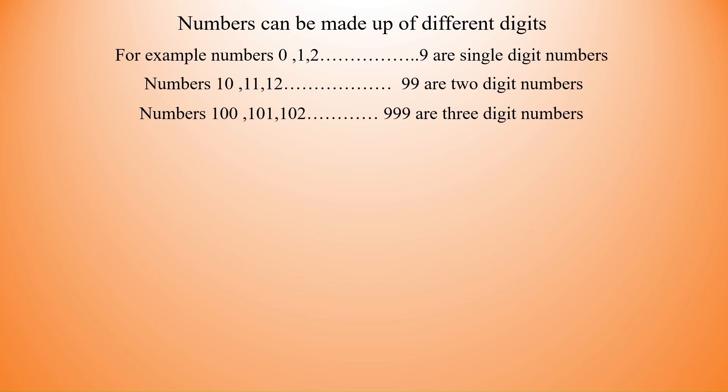Numbers can be made up of different digits. For example, numbers 0, 1, 2, 3, etc. up to 9 are single digit numbers. Numbers 10, 11, 12, etc. up to 99 are 2-digit numbers. Numbers 100, 101, 102 up to 999 are 3-digit numbers. Same way we can have numbers with 4 digits, 5 digits, and so on.